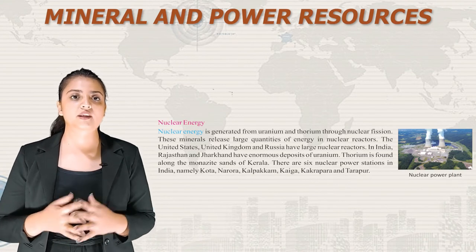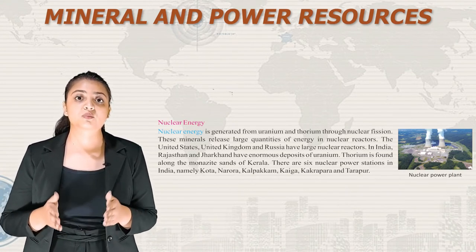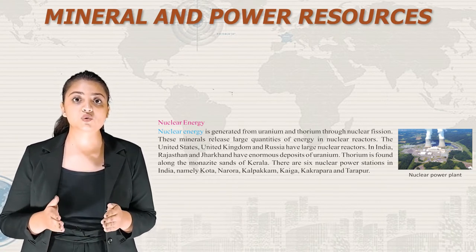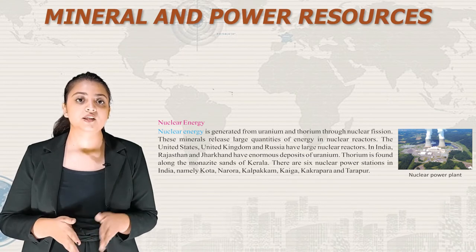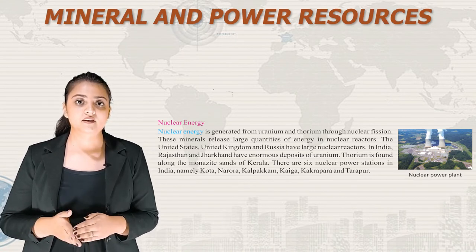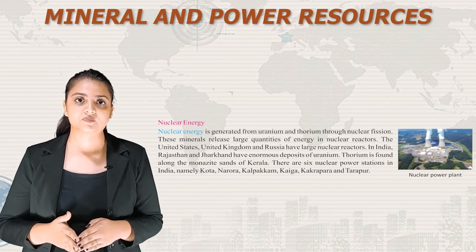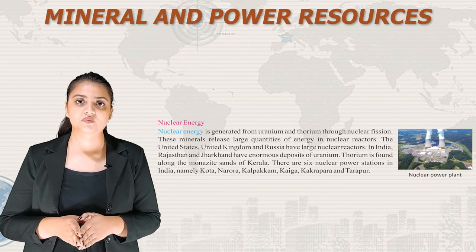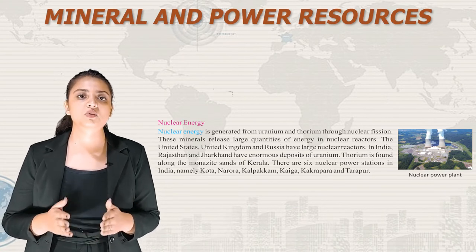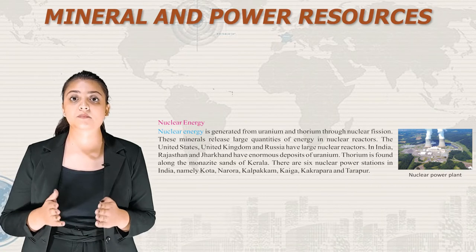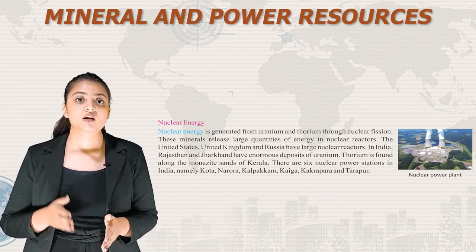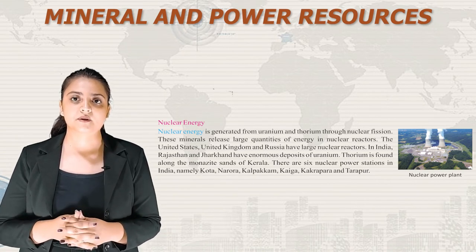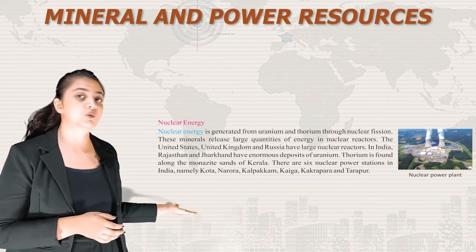Now let's talk about nuclear energy. Nuclear energy is generated from uranium and thorium through nuclear fission. These minerals release large quantities of energy in nuclear reactors. The United States, United Kingdom and Russia have large nuclear reactors. In India, Rajasthan and Jharkhand have enormous deposits of uranium. Thorium is found along the monazite sands of Kerala. There are six nuclear power stations in India — Kota, Narora, Kalpakkam, Kaiga, Kakrapar and Tarapur. Here is an image of a nuclear power plant.